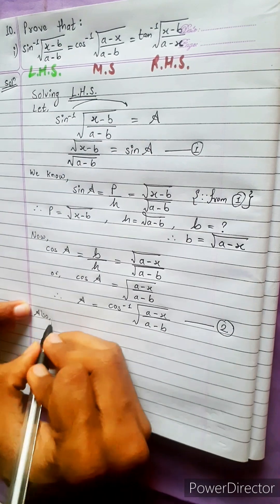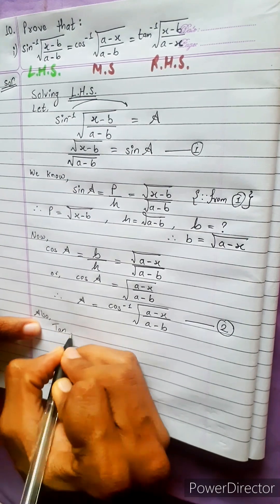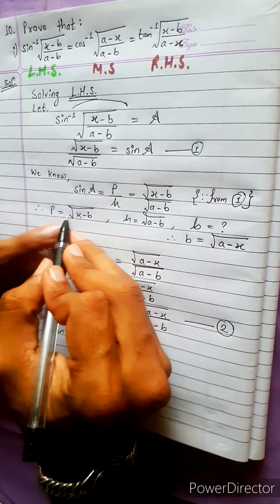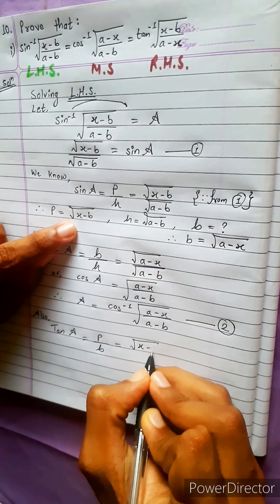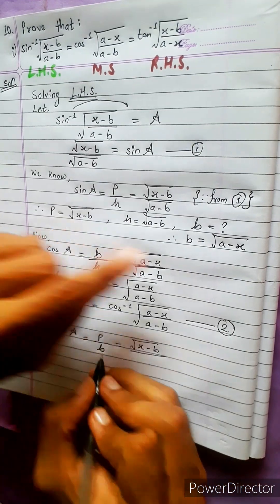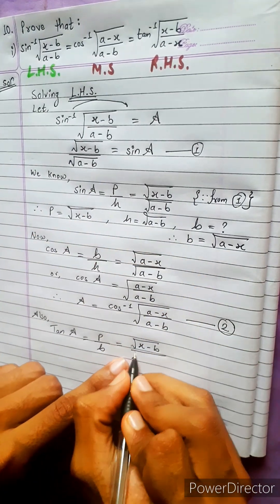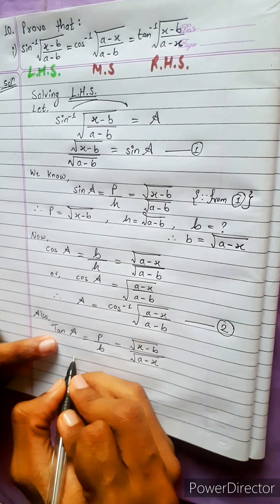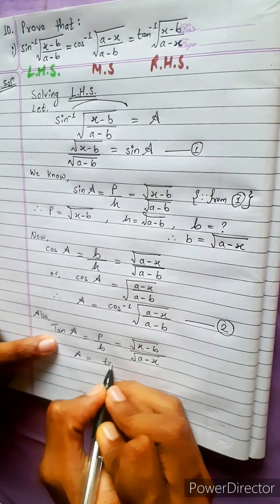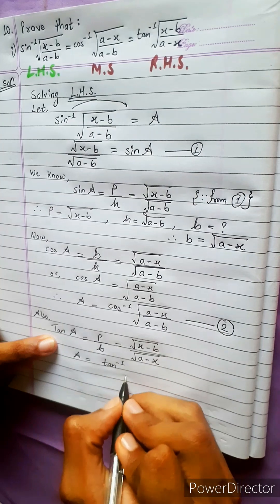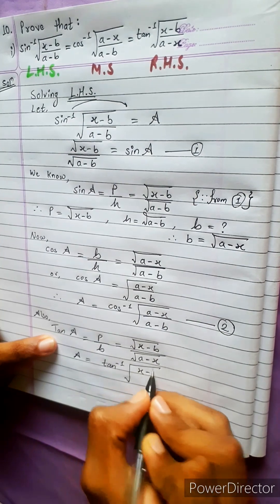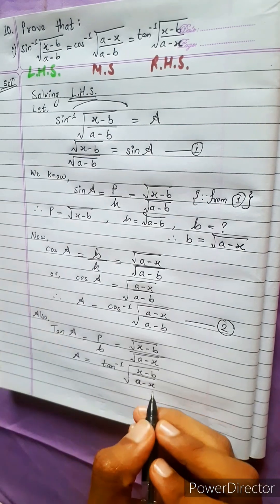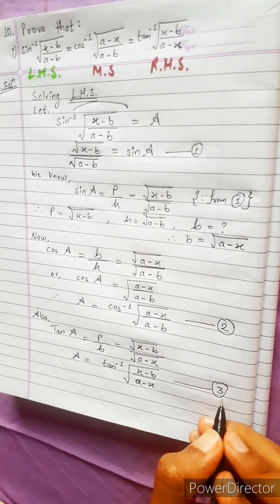Also, tan A equals perpendicular divided by base, which equals square root (x minus b) divided by square root (a minus x). Therefore A equals tan inverse of square root (x minus b) upon square root (a minus x). This is equation 3.